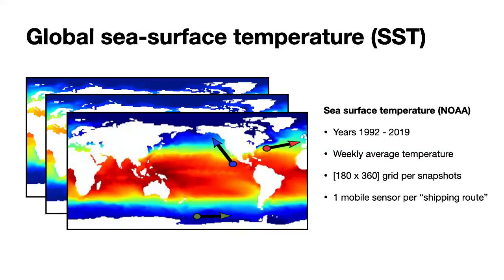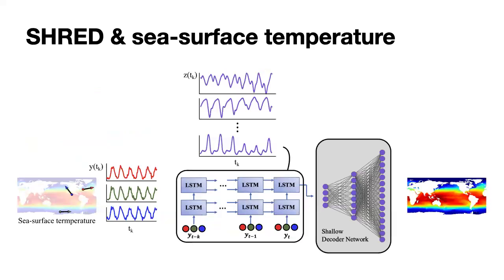What I did was pretend there were shipping routes: one on the west coast of the US, one across the Atlantic, and one down in Antarctica, to see how important the trajectories were toward reconstructing the full temperature fields. For each of these three shipping routes, as well as permutations and different combinations, we learned a mapping using SHRED between the sensor measurements. You can see the trajectories showing every single temperature value at the moving location of the ship. Those trajectories are used as the limited input to learn the low-rank latent space and reconstruct the full temperature field.